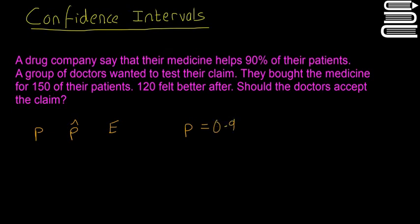And our sample proportion, so remember the sample here is 150 people. Our P-hat is equal to 120 divided by 150, which is equal to 0.8. So the sample proportion says that it only helps 0.8% of people, but we can't just take the sample proportion on its own. We have to add in the margin of error because it could be a little bit wrong because of the amount of people we took.